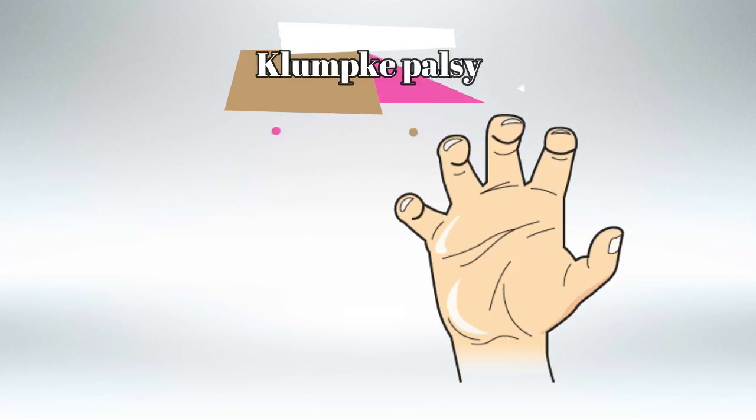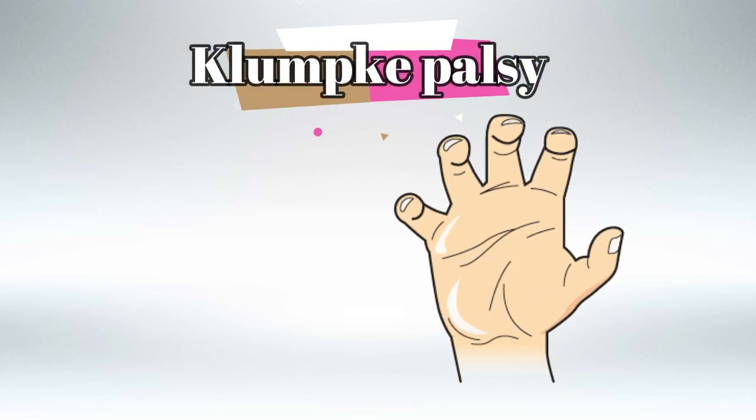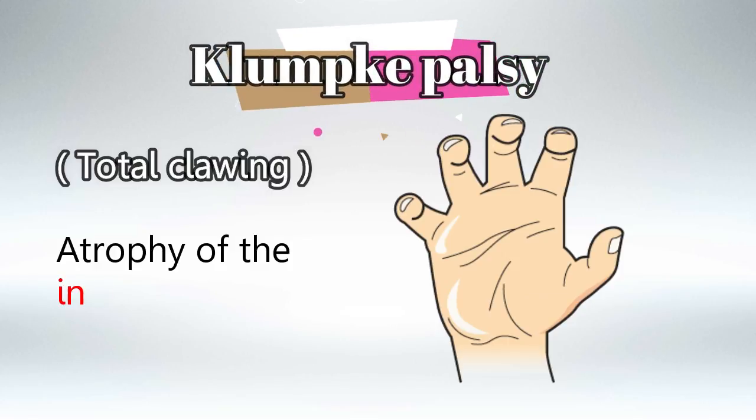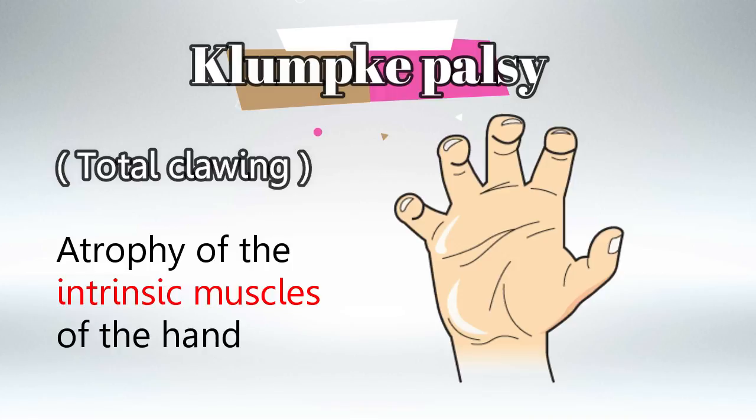As you can see, Klumpke Palsy is presenting with total clawing of the hand and atrophy of the hand muscles. This will include the Lumbricals, the Interossei, and the Thenar and Hypothenar muscles.